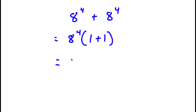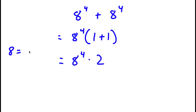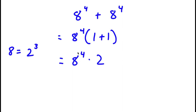If I simplify those in the parentheses, I get 8 to the power of 4 times 2, since 1 plus 1 is 2. Now, 8 here is the same thing as 2 to the power of 3. So if I replace 8 with 2 to the power of 3, I get 2 to the power of 3 to the power of 4, times 2.